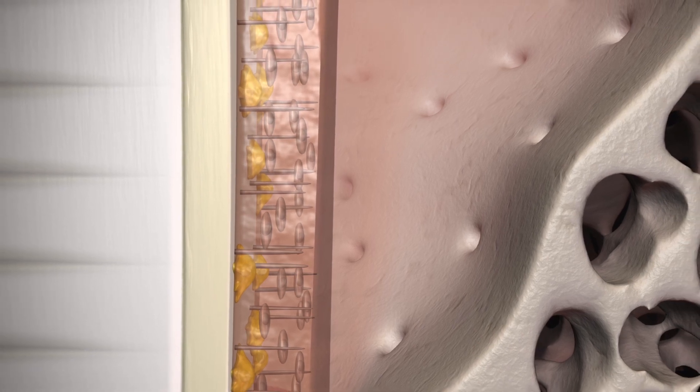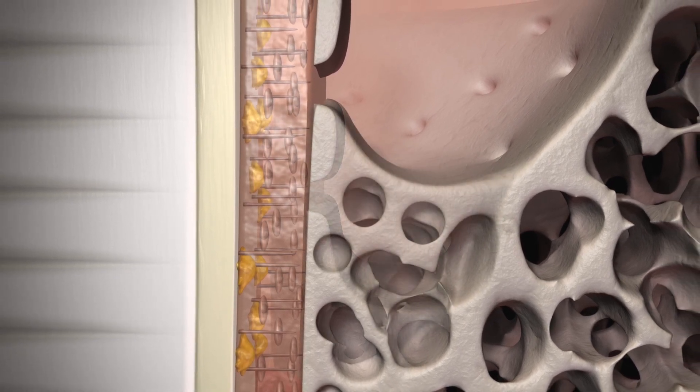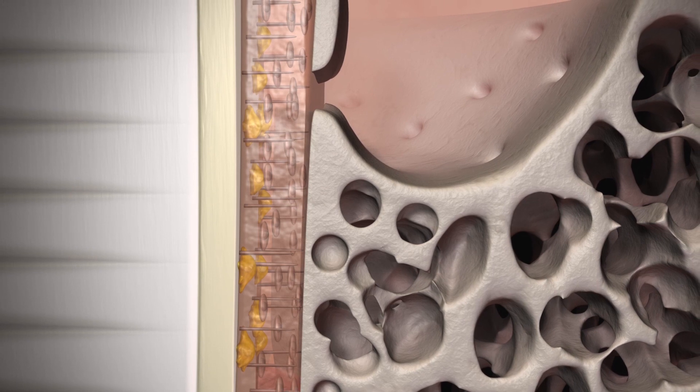In connection with the processes described up to this point, new alveolar bone grows on the root surface and in the defect gap. Thus, the periodontal gap achieves its physiological width.